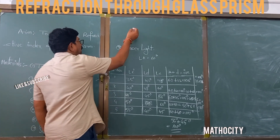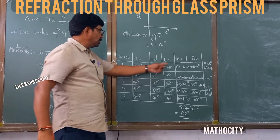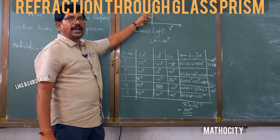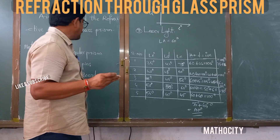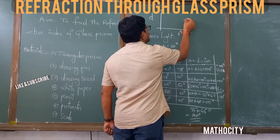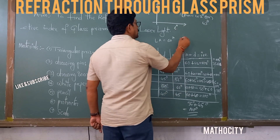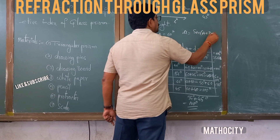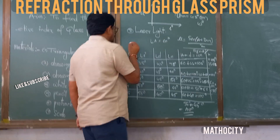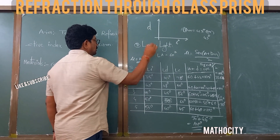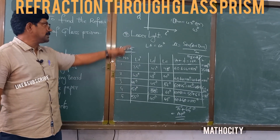Now you have to draw the graph for angle of incident and angle of deviation. Take the angle of incident on the x-axis and angle of deviation on the y-axis, and you will get a curve. For a certain angle of incidence, you will get the angle of minimum deviation.